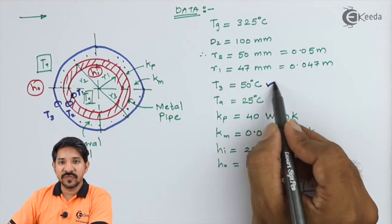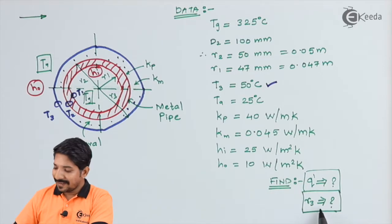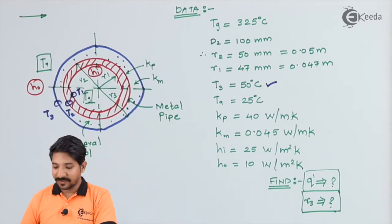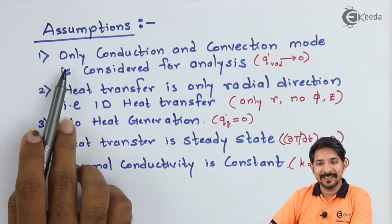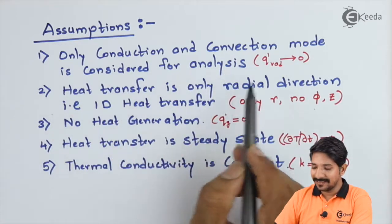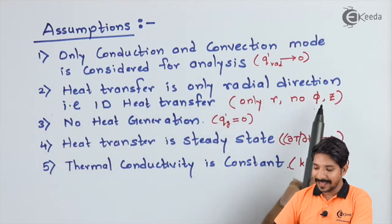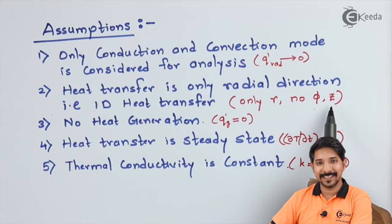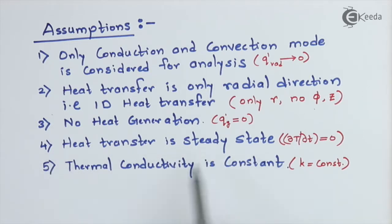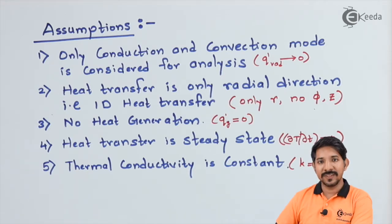Before solving this problem, we write down the assumptions. First, only conduction and convection are considered — radiation is neglected. Second, heat transfer is only in the radial direction, so phi and z directions are neglected. Third, no heat generation. Fourth, heat transfer is steady state. Fifth, thermal conductivity k is constant. With these assumptions we can simplify the general equation and solve the problem.